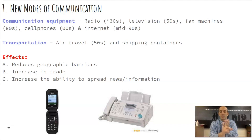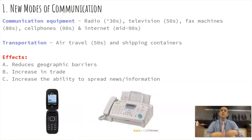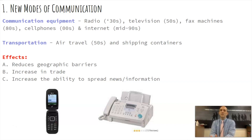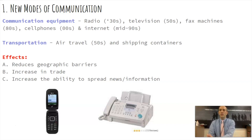We have television in the 50s, fax machines in the 80s. Fax machines allow you to transmit paper documents from one place to another, which made business life so much easier in the 80s and 90s, and people saw this as a huge revolution in communication. Then you have cell phones in the 90s and early 2000s, which are still evolving today. And of course, you have the internet, which started in the mid-90s and really took off in the early 2000s.